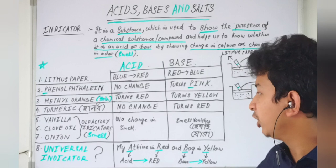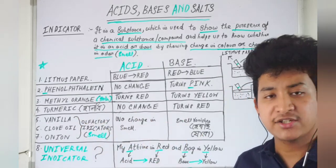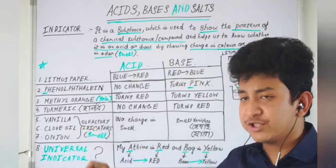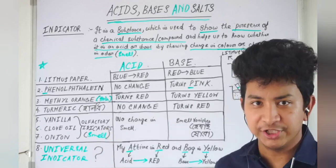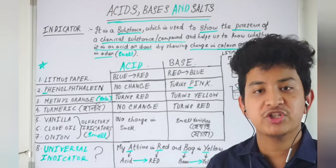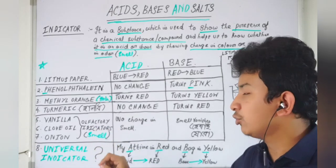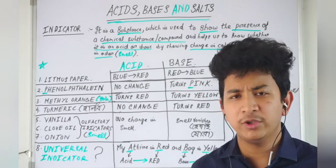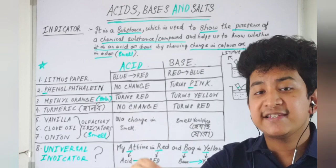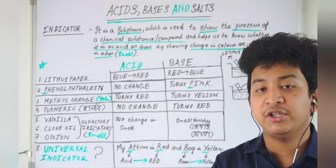Now we have olfactory indicators. There are three types of olfactory indicators: first is vanilla, second is clove oil, and third is onion. The definition of olfactory indicators will be provided in the description box. These are indicators where we identify acid and base by change in smell.